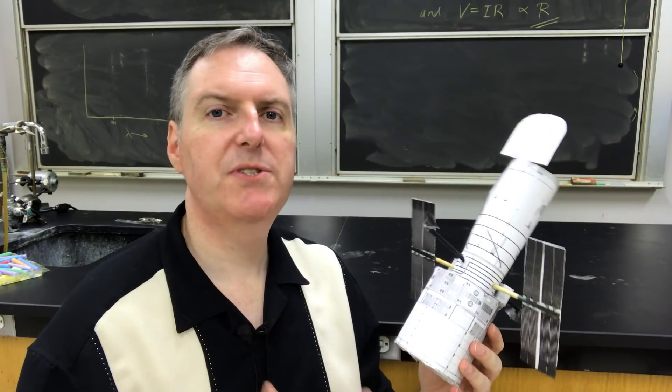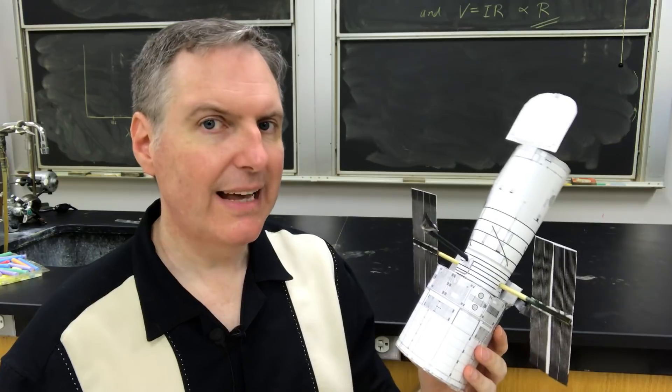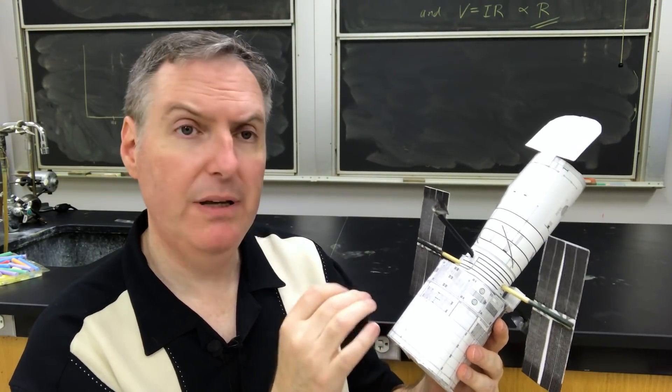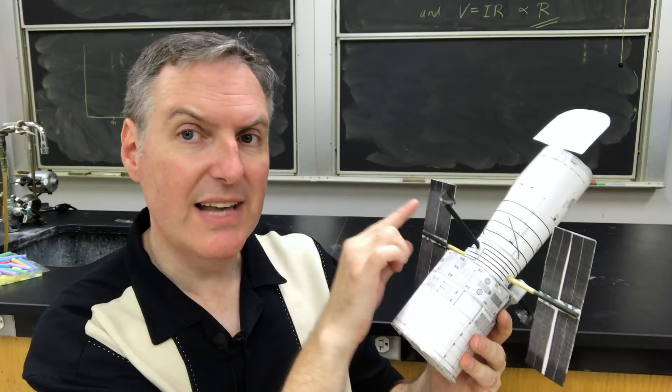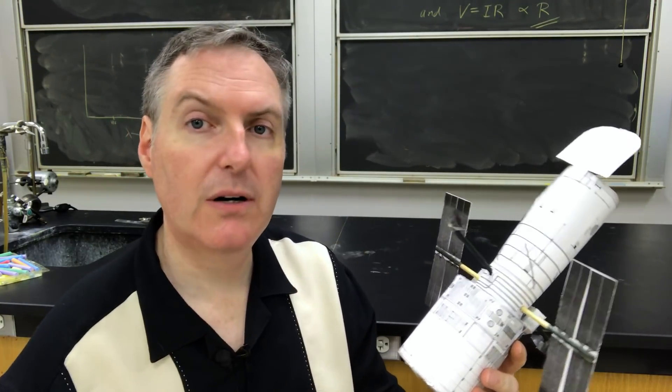Now for Hubble to work most efficiently, there needs to be three gyroscopes spinning at 19,200 RPM. And these three gyroscopes are essential for keeping Hubble pointed in exactly the right direction for long durations, so it can take these very long deep exposures.